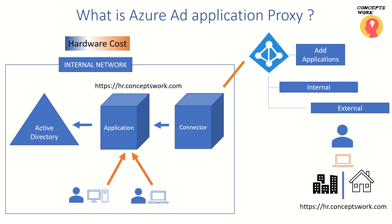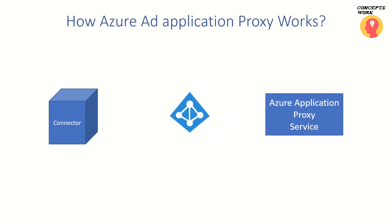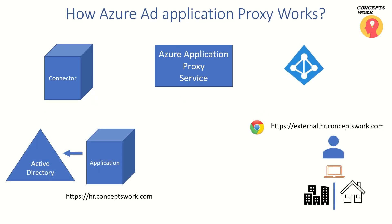Let's take a step further and understand how the three different components of Azure AD Application Proxy work. The three components are: the connector that you deploy in your on-prem environment, Azure AD, and the Azure AD Application Proxy servers. Let's understand how the entire process works when your application is published through Azure AD Application Proxy. Using the same application — hr.conceptswork.com — the external endpoint link I gave while adding the application in Azure Active Directory will be referred to as the endpoint.